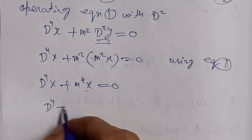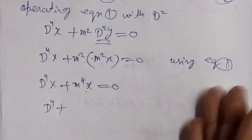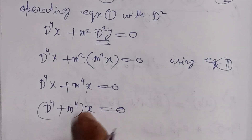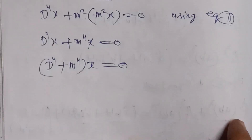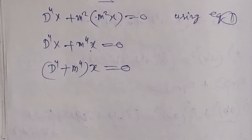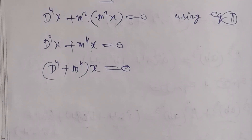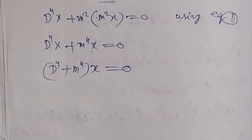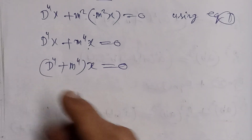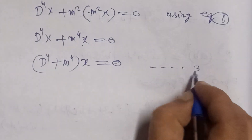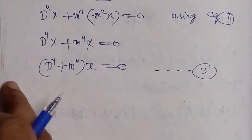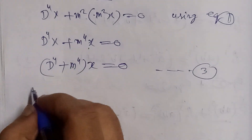Now we have a differential equation only in x, with t as the independent variable. This is a linear differential equation. To solve it, we find the complementary function and particular integral. Let us label this as equation 3 and find its auxiliary equation to determine the complementary function.